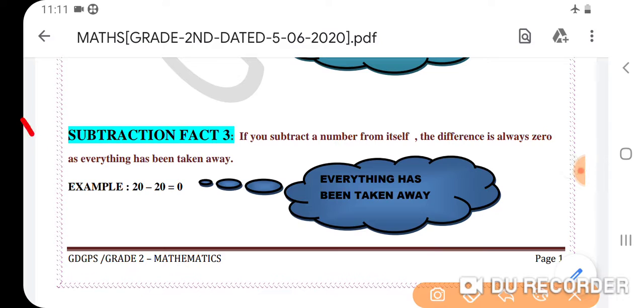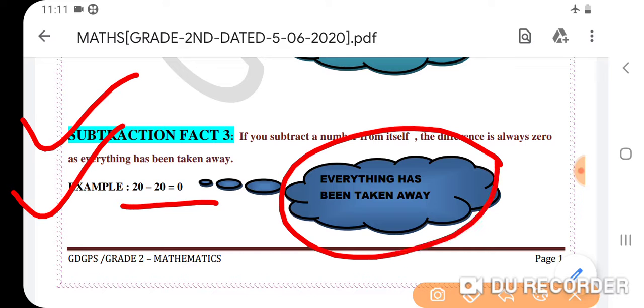Now we will see the third fact. If you subtract a number from itself, the difference is always 0 as everything has been taken away. For example, 20 minus 20 equals 0. Everything has been taken away, so the difference is 0.